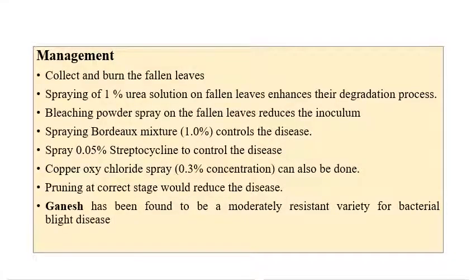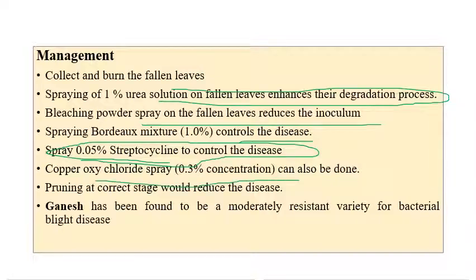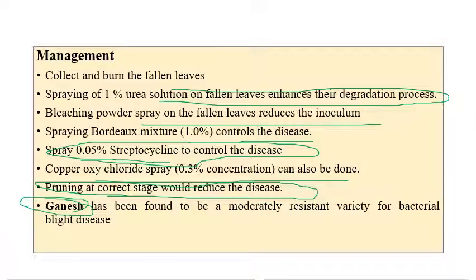For management of bacterial blight, collect and burn fallen leaves. Spray 1% urea solution and bleaching powder on fallen leaves to destroy inoculum. Spraying of Bordeaux mixture controls the disease, along with spraying of 0.05% streptocycline sulfate and copper oxychloride at 3% concentration. Pruning of pomegranate at the correct stage is important. Ganesh is a moderately resistant variety available against bacterial blight, which is a very important disease.